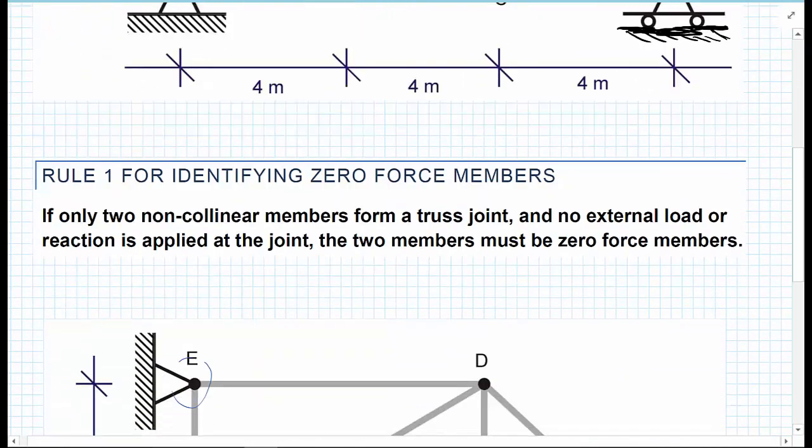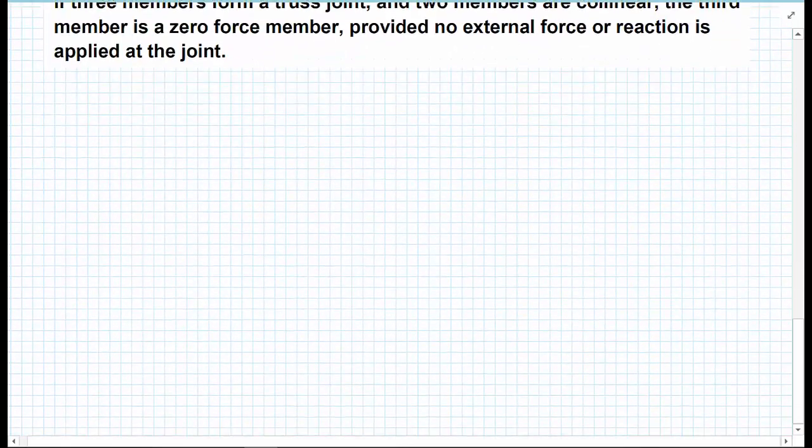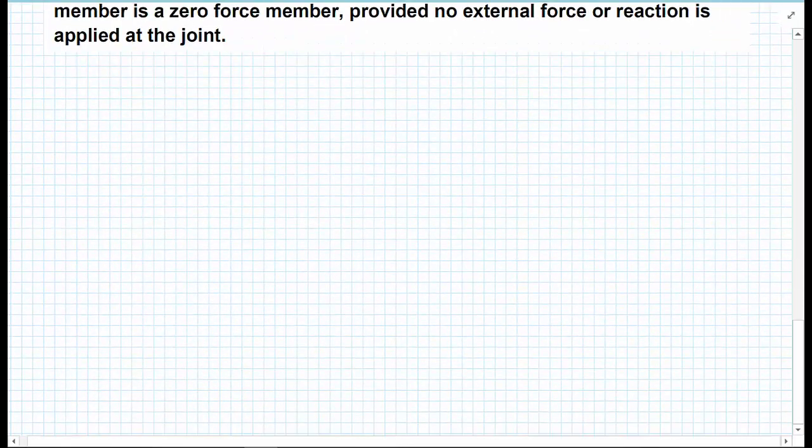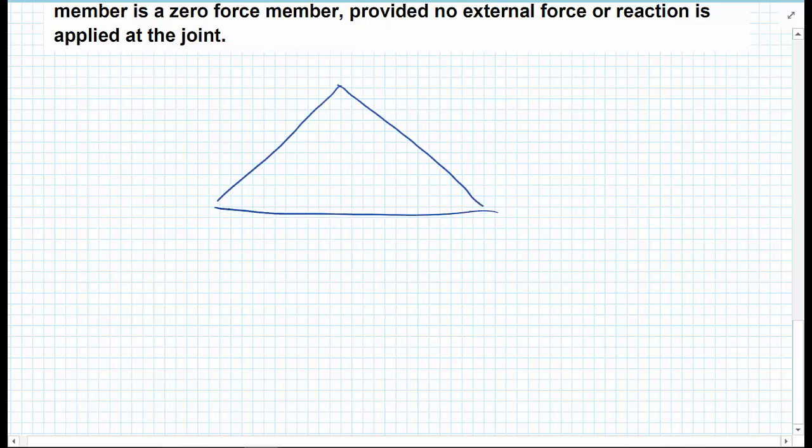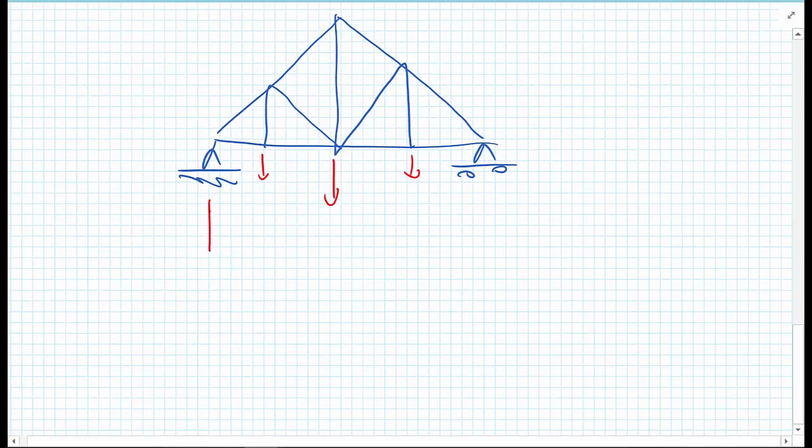One other thing that can come in really handy when solving these problems: a lot of trusses tend to be symmetric in nature. Maybe we've got trusses like this with lots of members in there. If and only if the geometry is symmetric, and the loading is also symmetric, then we can use that symmetry.